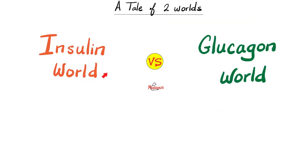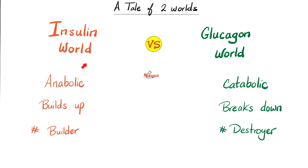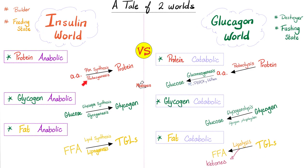Quick review of the last video — insulin stan versus glucagon stan. Insulin world has insulin only; glucagon world has glucagon, cortisol, epinephrine, thyroxine — basically any hormone that's not insulin. Insulin world is anabolic; glucagon world is catabolic. Insulin is the feeding state; glucagon is in the fasting state. Insulin is pro-proteogenesis, glycogenesis, lipogenesis. Glucagon stimulates proteolysis, gluconeogenesis, glycogenolysis, lipolysis, and ketosis.